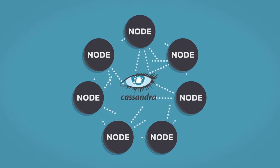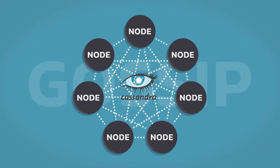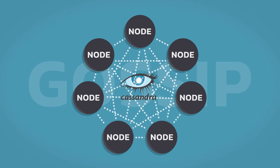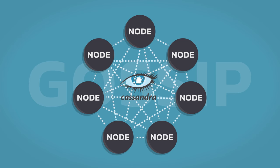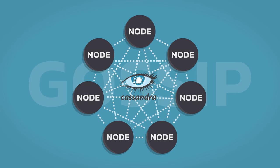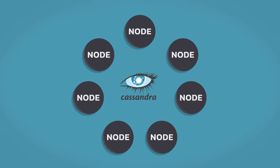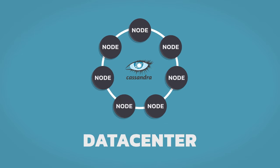Nodes communicate through a protocol called gossip, and they use this to transmit information to one another — an example being the status of a node. Nodes are organized into groups called data centers. Notice the ring connecting all of the nodes; in this case, we could say all of these nodes belong to the same data center.